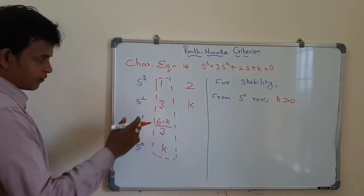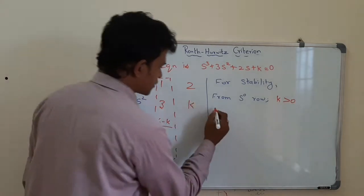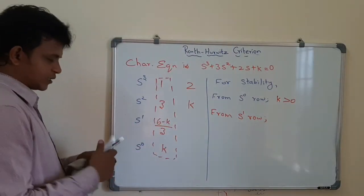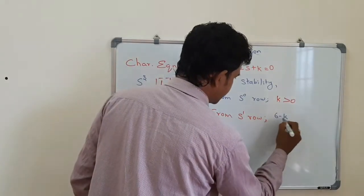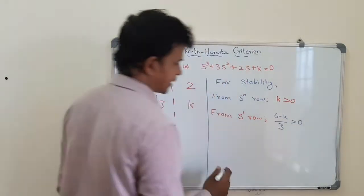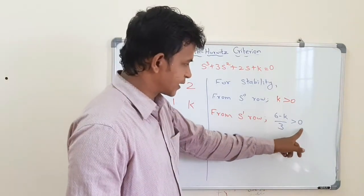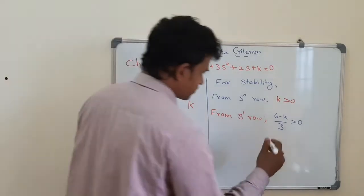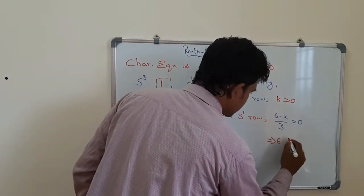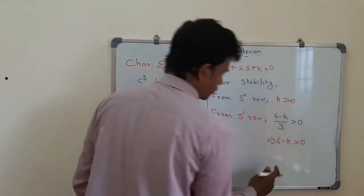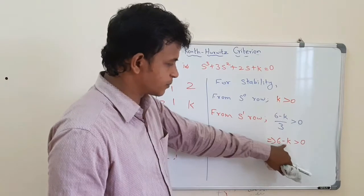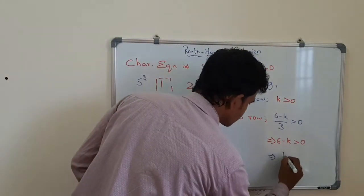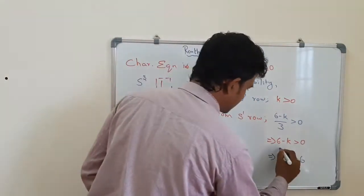From the s¹ row, (6 minus k) divided by 3 should be greater than 0. Solving this, 6 minus k should be greater than 0, which means k should be less than 6.